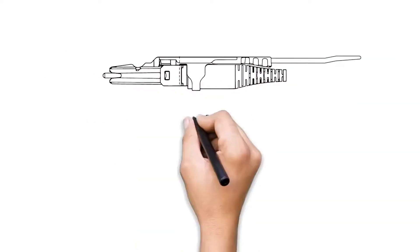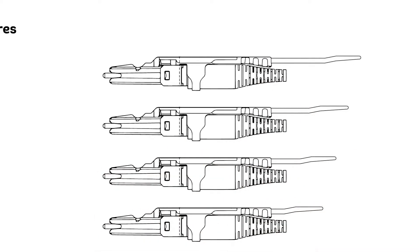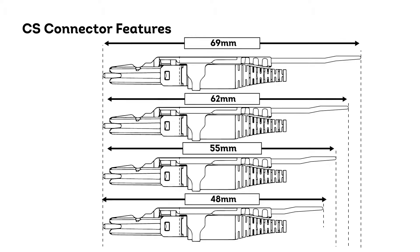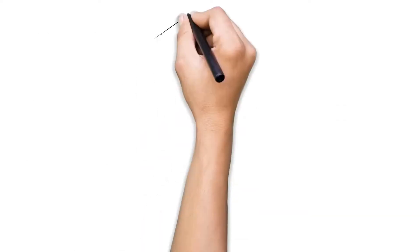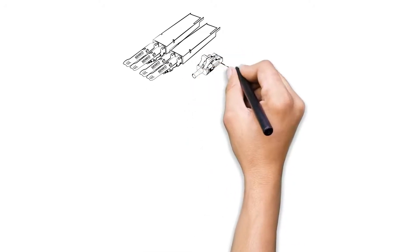As the CS connectors can be very closely packed, there is a way to access individual connectors. Hence, the CS connector is designed with a push-pull tab with various lengths to make mating and demating easier. On a one RU patch panel, you can double the connector density with the CS connector.